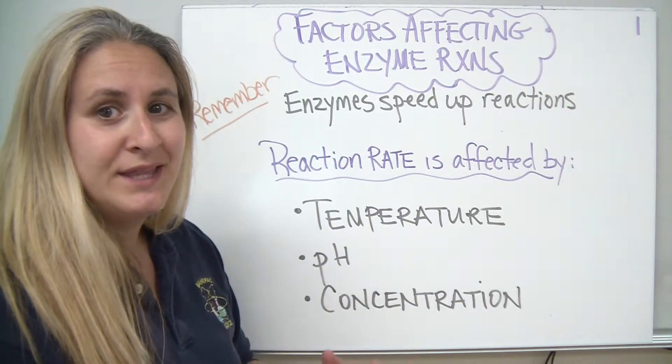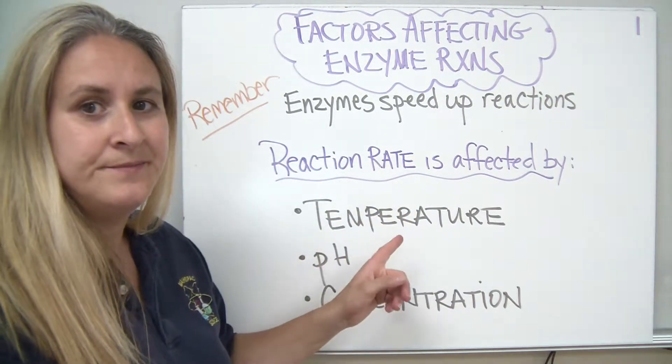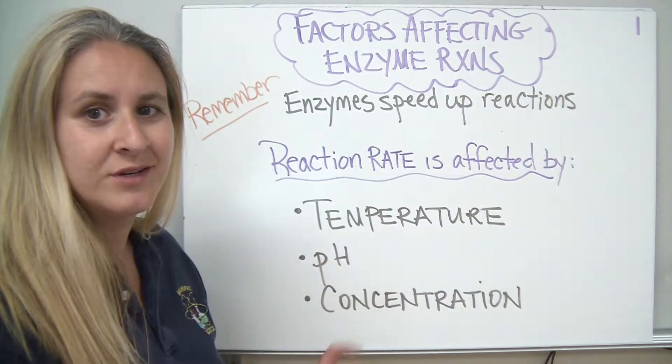So there are three main things that can affect the reaction rate: temperature, pH, and concentration.